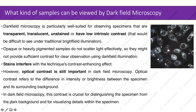The next slide discusses what kind of samples can be viewed by dark field microscopy. Dark field microscopy is particularly well suited for observing specimens that are transparent, translucent, unstained, or have low intrinsic contrast that would be difficult to see under traditional bright field illumination. Opaque or heavily pigmented samples do not scatter light effectively, so they might not provide sufficient contrast for clear observation using dark field illumination.